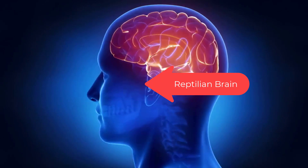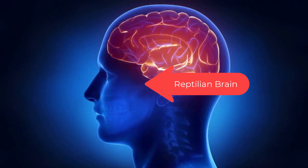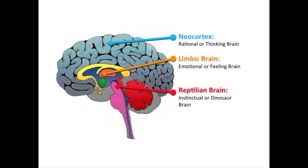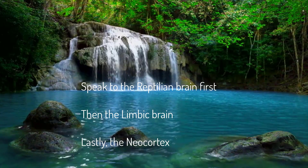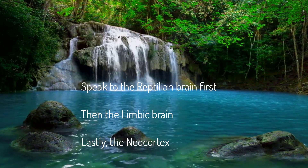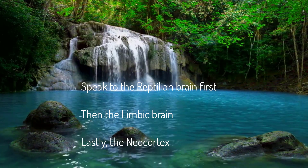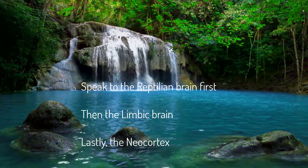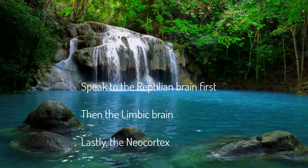The old brain, the reptilian brain — it decides. It can take into account input from the other brains, but it can also decide faster than the blink of an eye, then use the other brains to justify the decision. The reptilian brain is visual and hardwired into the brain stem. It can make survival decisions before the other brains can even begin to process the data.